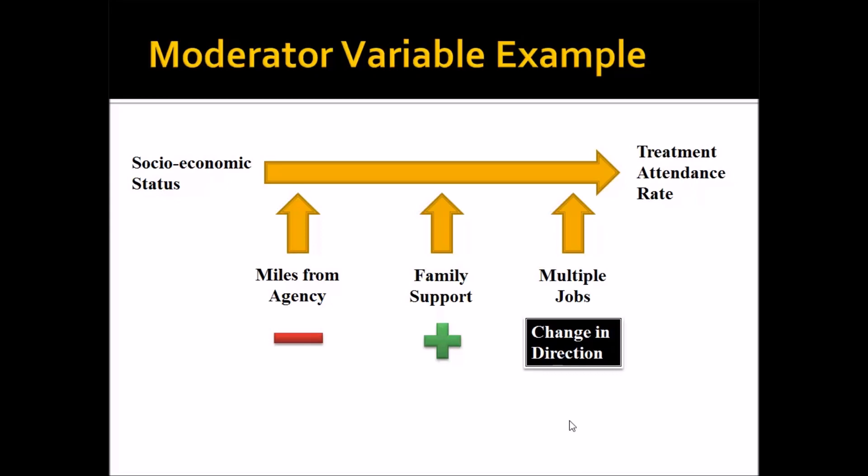To summarize, the relationship between socioeconomic status and treatment attendance rate in the miles from agency example remains positive but is weakened as miles increase. Whereas with multiple jobs, the direction actually changes. These are the three types of moderators: one that weakens the strength of the relationship, one that increases the strength, and one that changes the direction.